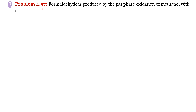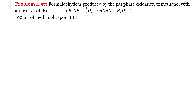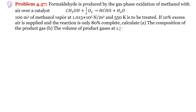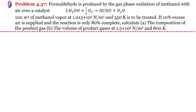Problem 4.57: Formaldehyde is produced by the gas-phase oxidation of methanol with air over a catalyst. 100 cubic meters of methanol vapour at a particular pressure and temperature is to be treated. First, we find total moles of CH3OH using the ideal gas equation, then estimate total air supplied given 10% excess air, and finally find product gas composition with 80% reaction completion.